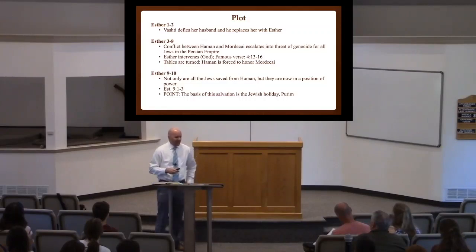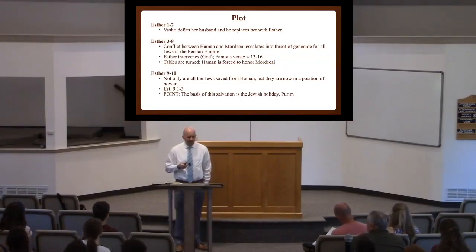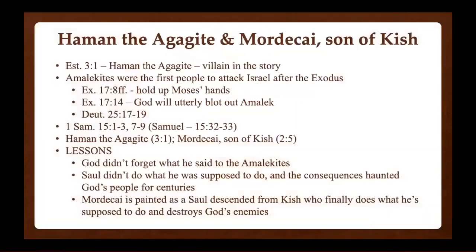That's the only overview of Esther I intend to do tonight. What I want to spend time on are two lessons from Esther that are really important for life. Turn to chapter 3, verse 1. We're introduced to the bad guy: 'After these things, King Ahasuerus promoted Haman the Agagite.' Across the board, everybody makes a big deal out of Haman being an Agagite. That might sound like something you should know — so let's do a little bit of history.